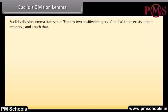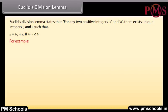Euclid's division lemma states that for any two positive integers A and B, there exist unique integers Q and R such that A is equal to BQ plus R, where 0 is less than or equal to R, which is less than B.